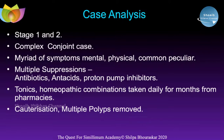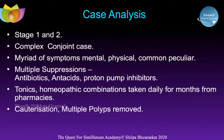We call this a complex conjoint case. She did start talking about some constitutional aspects — deaths in the family, parents' divorce — but nothing beyond that. There were loads of things happening in the last 50 years of her life. This is exactly how a complex conjoint case is formed: multiple diseases across multiple systems, myriad of common symptoms with no peculiars, and multiple suppressions — antibiotics, antacids, proton pump inhibitors, tonics, surgical cauterization, multiple polyps removed. This is where you look for the Hahnemannian miasmatic approach.